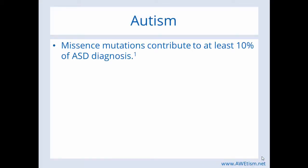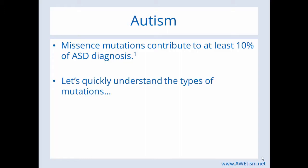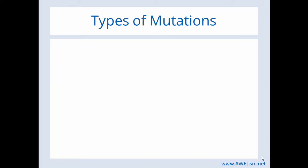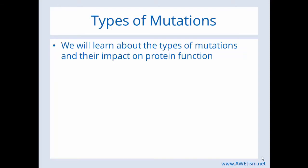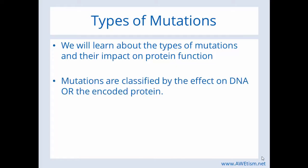Missense mutations contribute to at least 10% of autism diagnoses. So let's quickly understand the types of mutations. We will learn about the types of mutations and their impact on protein function. That's really the key point — what is the impact? And the impact is not the same for every mutation. Mutations are classified by the effect on DNA or the encoded protein.